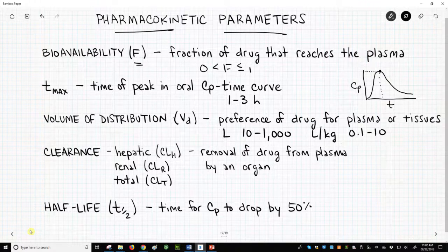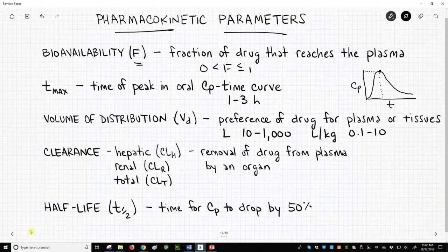In general, for oral drugs, hepatic clearance is more important than renal clearance. It is very difficult to give representative values for clearance.